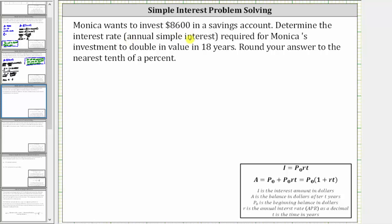Monica wants to invest $8,600 in a savings account. Determine the annual simple interest rate required for Monica's investment to double in 18 years. Round your answer to the nearest tenth of a percent.